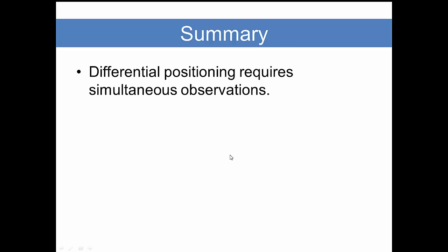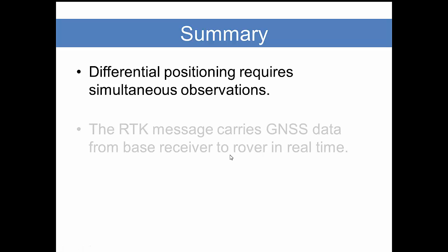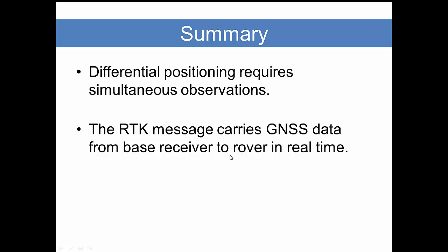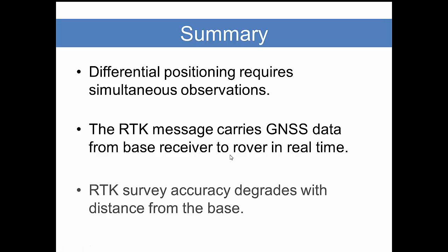Differential positions, as we said, require simultaneous observations—that is, two receivers listening to the same satellites and collecting data from those satellites at the very same time. The thing that makes differential positioning possible with instant results is the thing we call the RTK message that carries the GNSS data from the base receiver to the rover in real time, where the rover computes the vector from the base receiver.